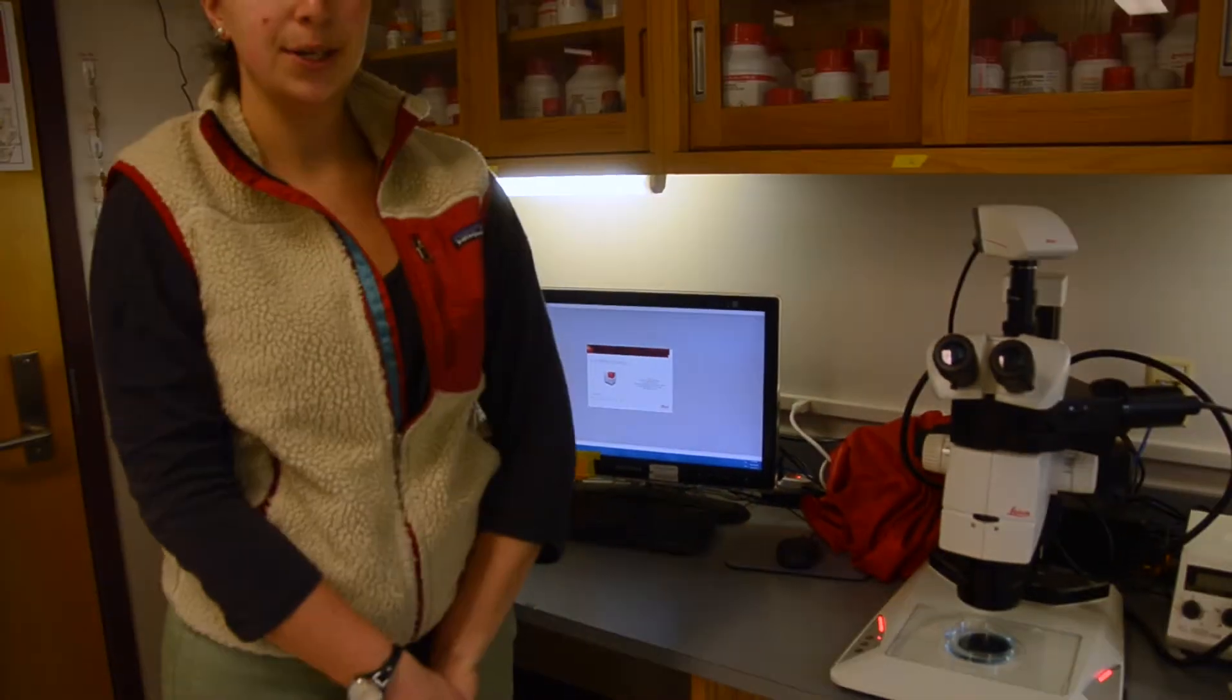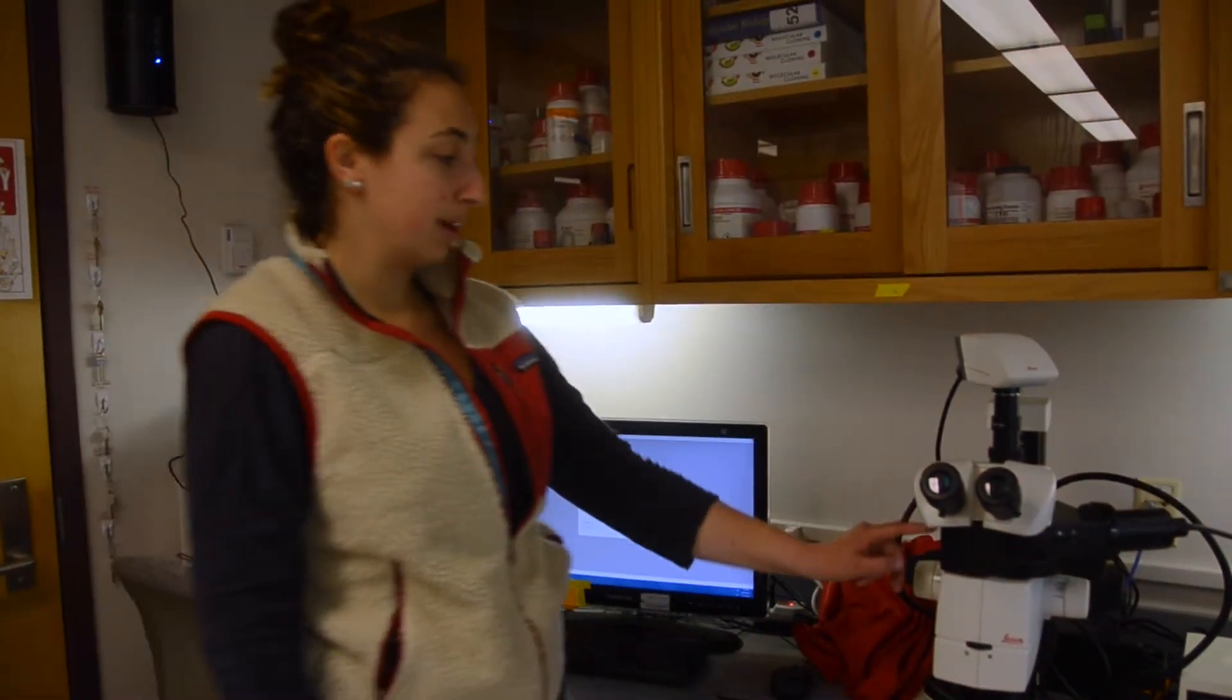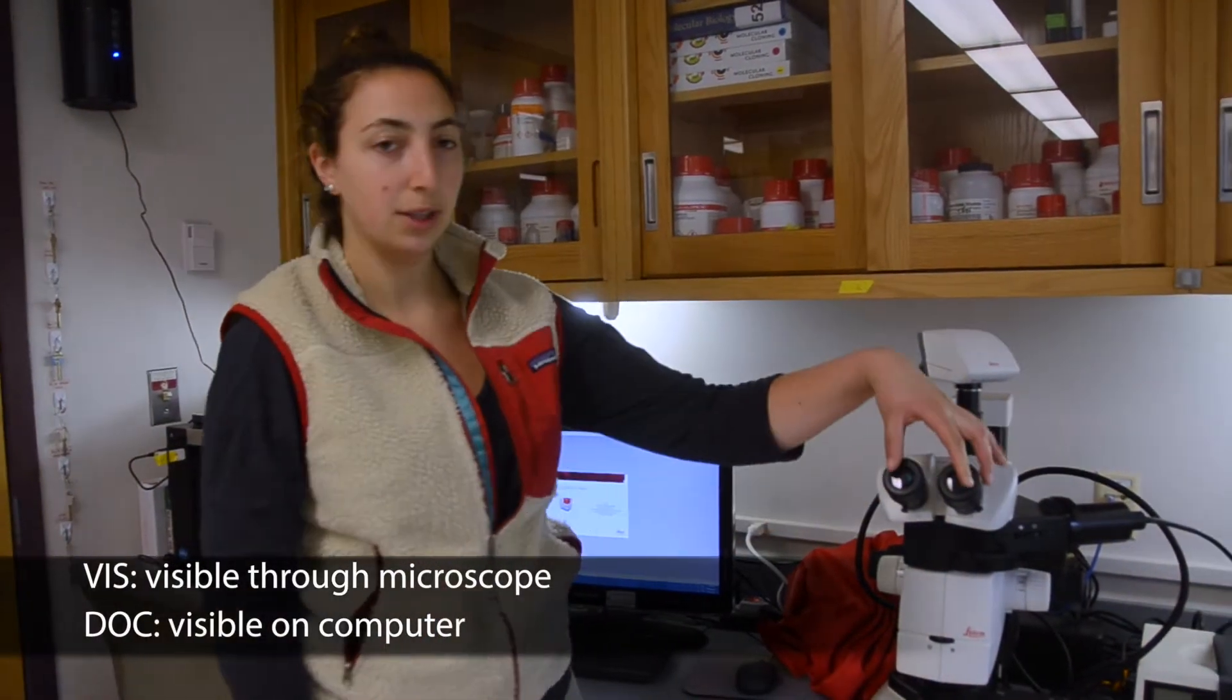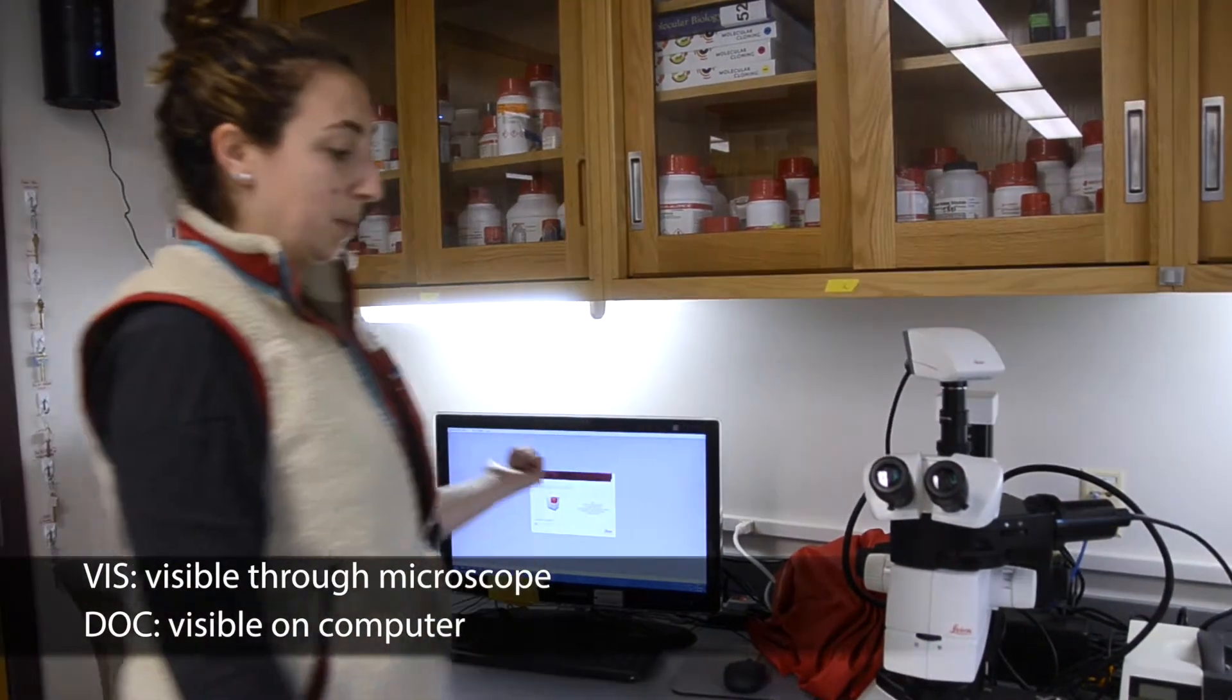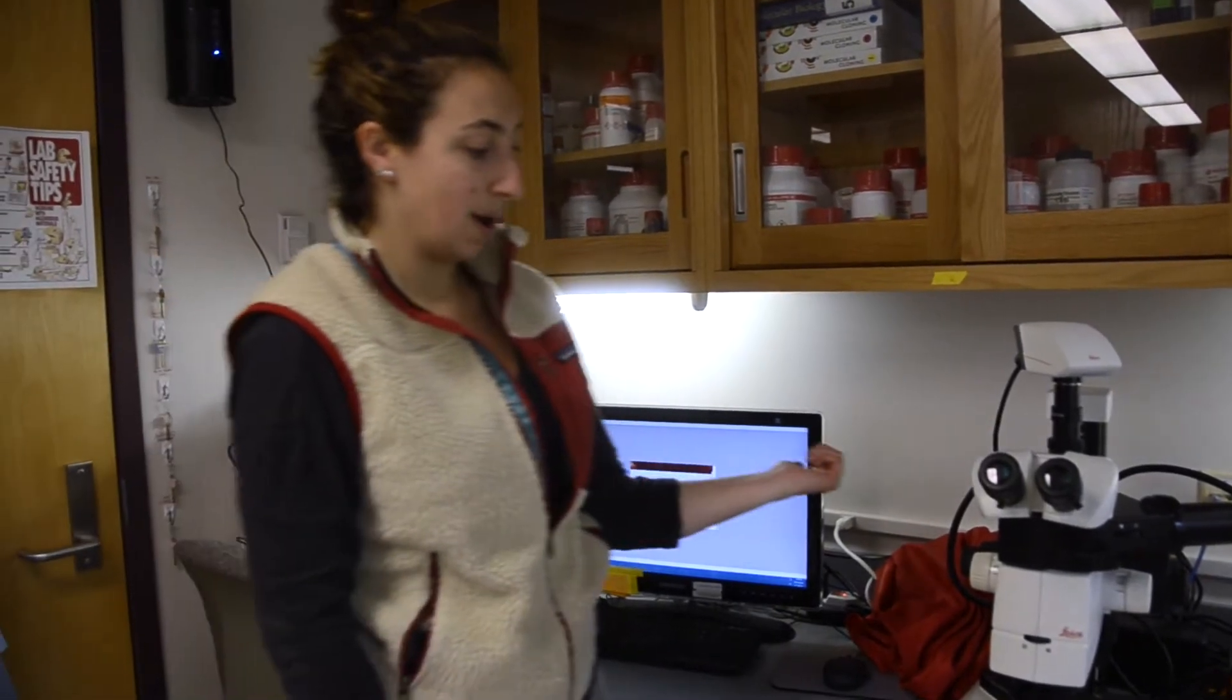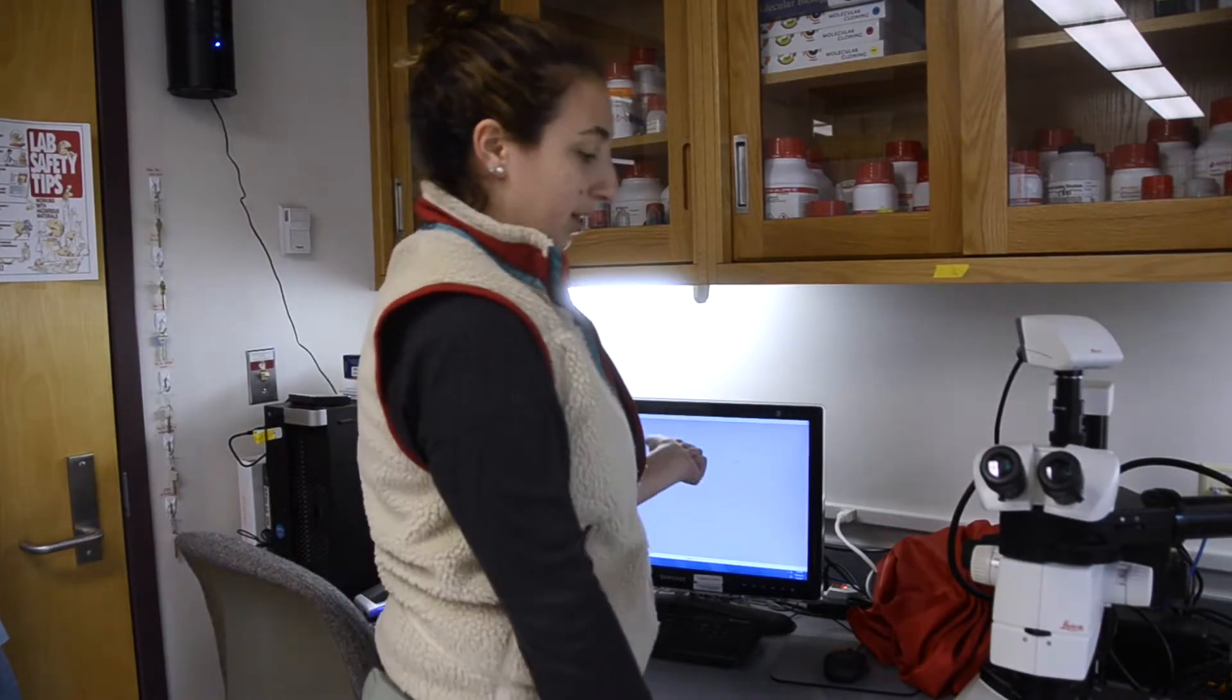The way I usually do it is you first, on the side of the microscope, you see viz and doc. Viz means you can look through it, and doc means it'll show up on the computer. So I first focus on what I want the picture to be, looking through the microscope, and then switch it to doc to readjust and then take the picture.